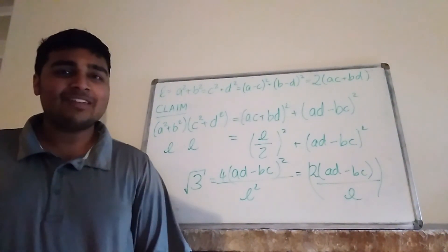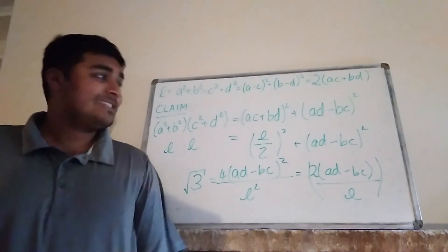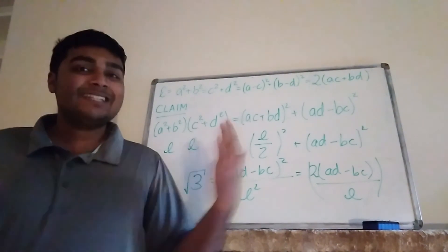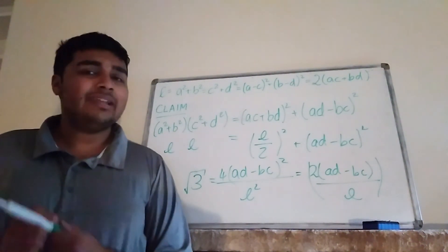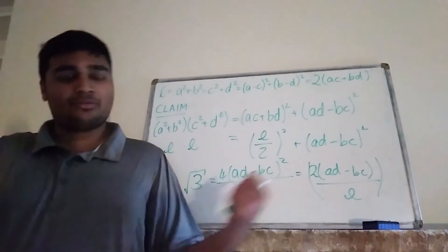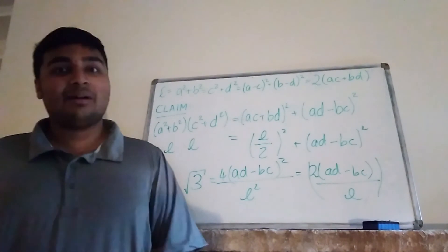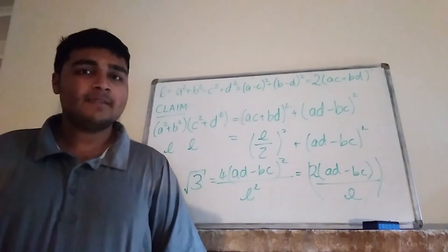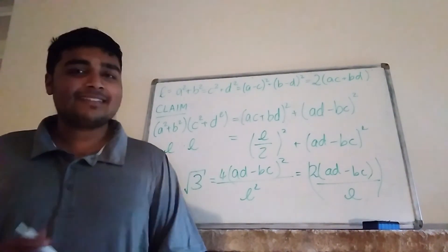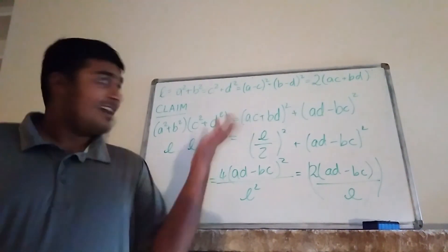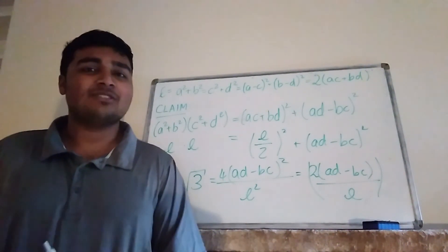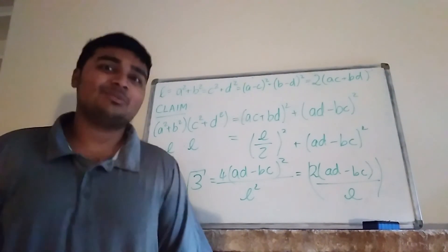I hope you've enjoyed this video. Here's a little extension task: we were working in the 2D plane, but is it possible to draw an equilateral triangle in 3D, where each vertex has three coordinates x, y, and z? I'll leave that as a bonus task for you. If you're new here, please consider subscribing and checking out some of my other fun maths videos. Have a great day!